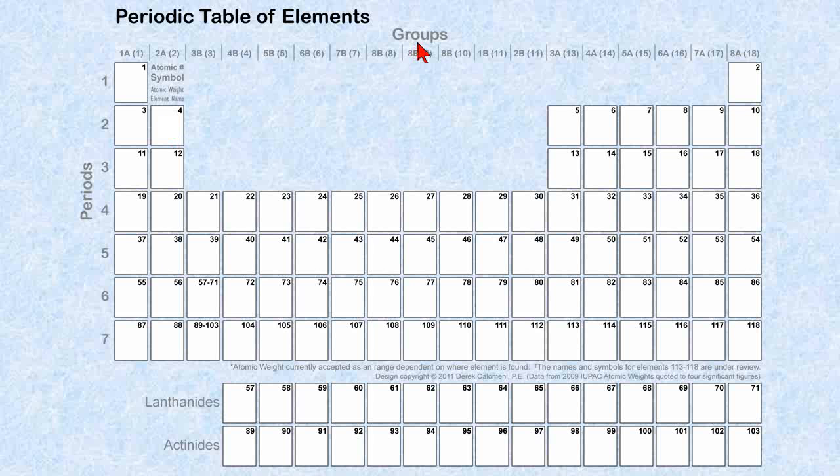On the top here we have groups. Note that there's the 1A symbol, 2A, and it goes to 3A all the way to 8A.